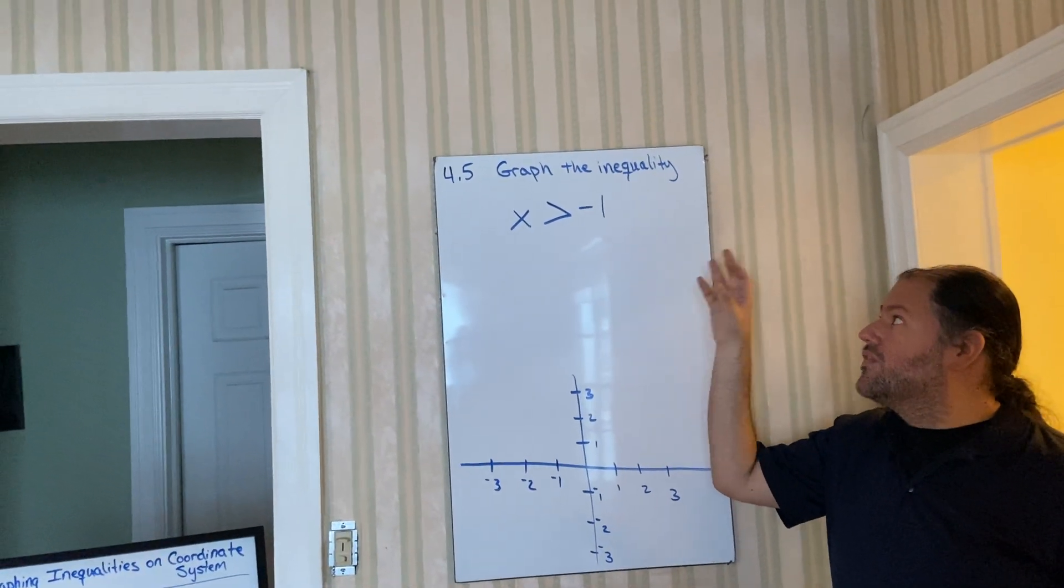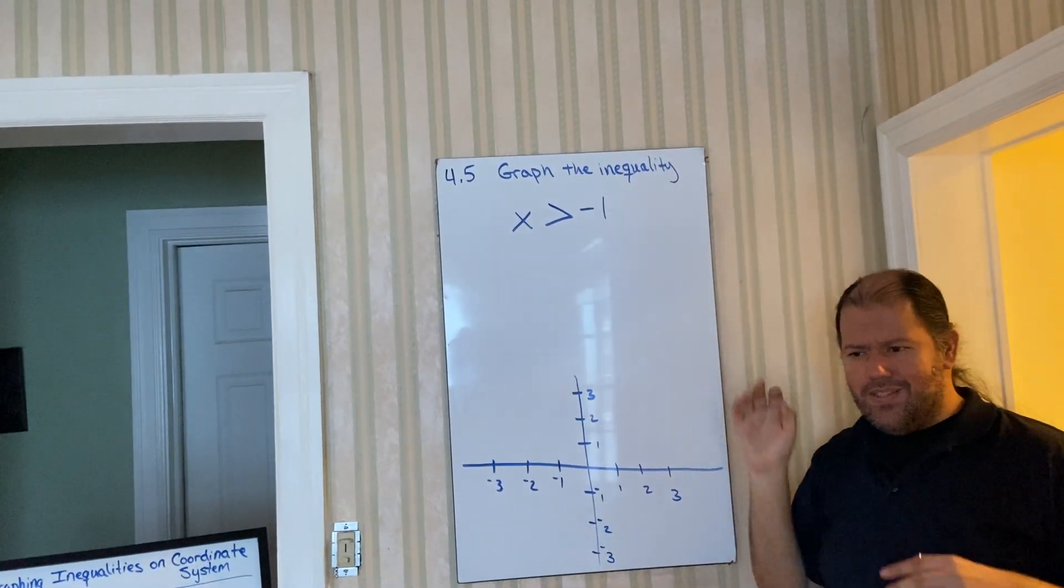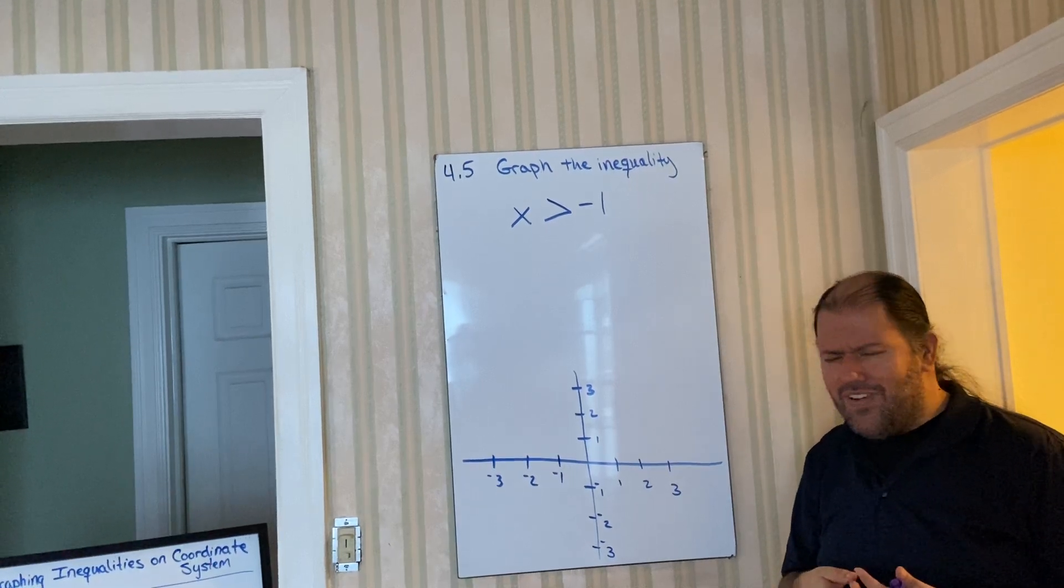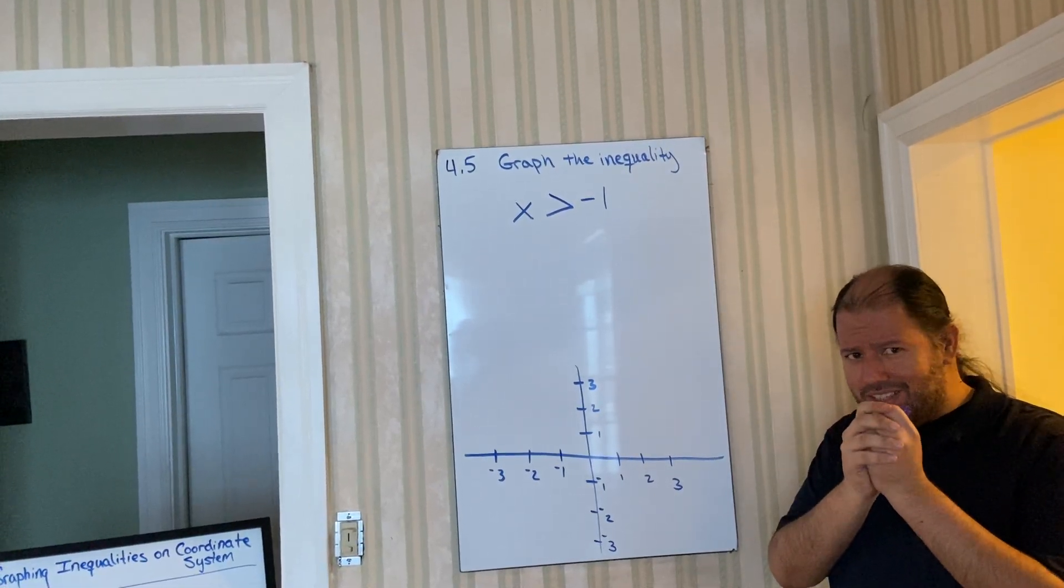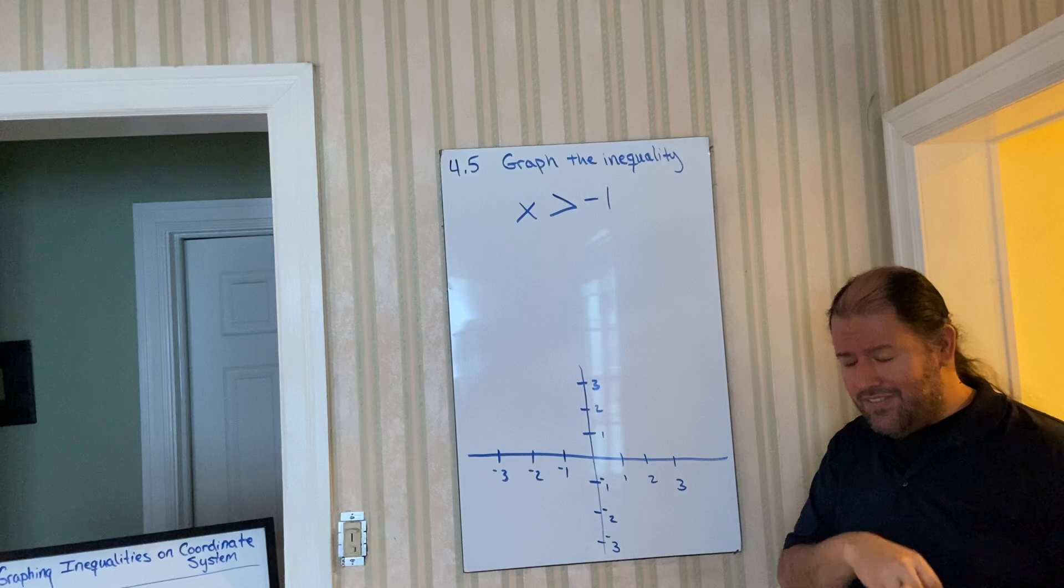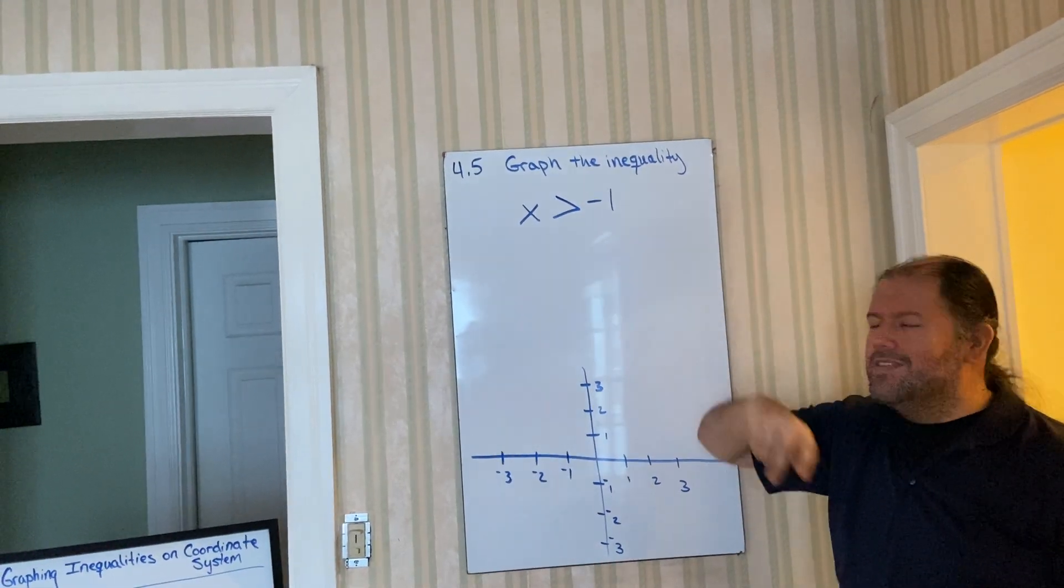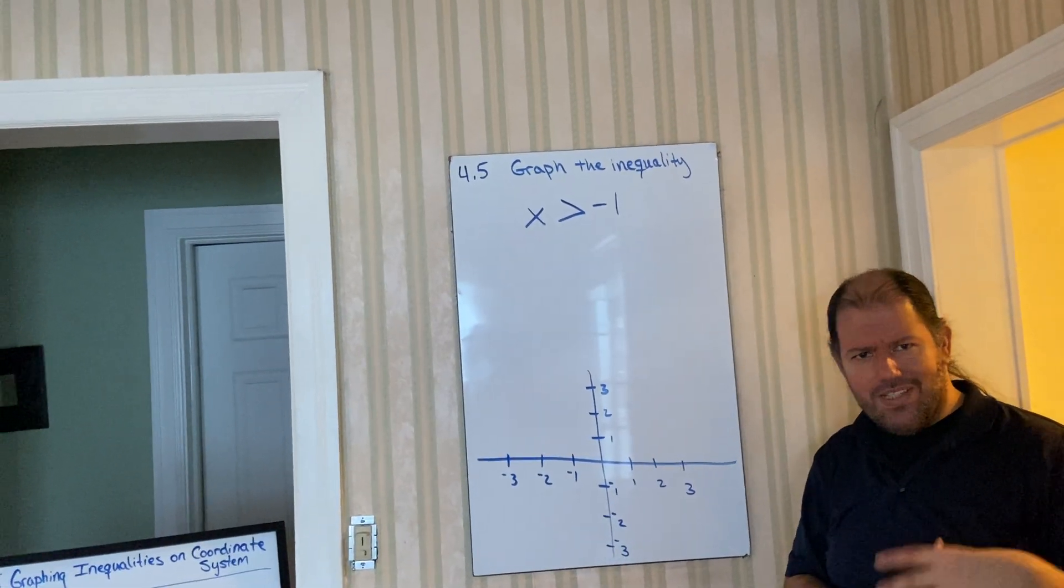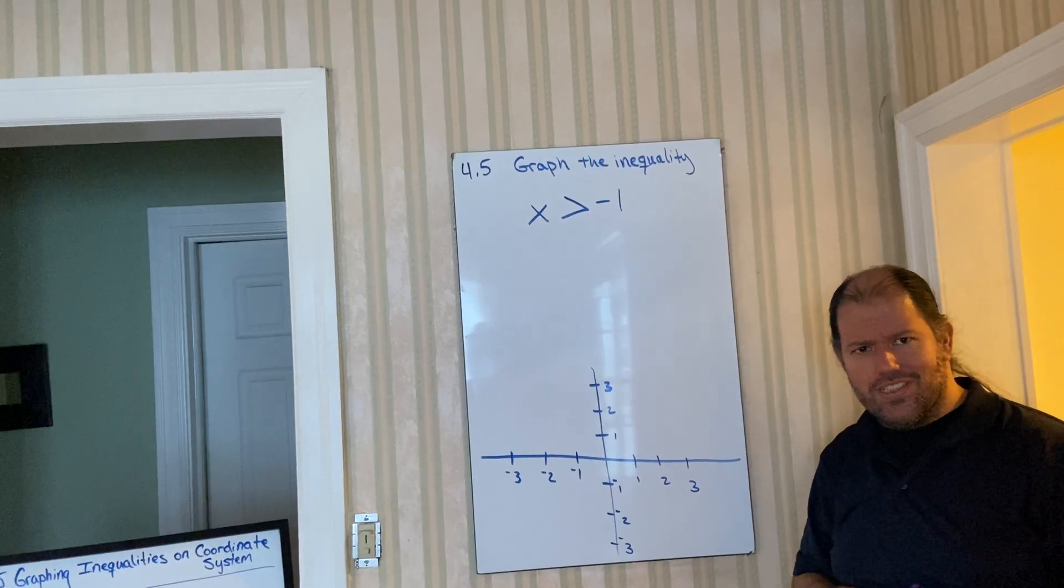So here we have graph inequality. You might be saying we've been doing graphing inequality. So what makes this one a little special than the other ones that I have videos for? Notice it only has one variable. It doesn't have a y. This one just has x's.